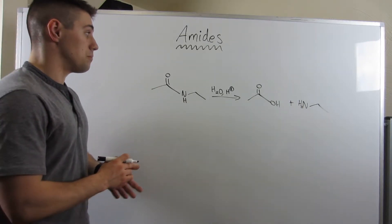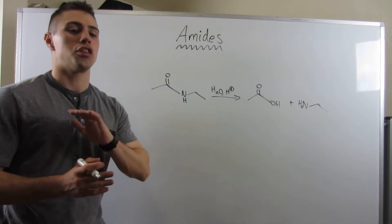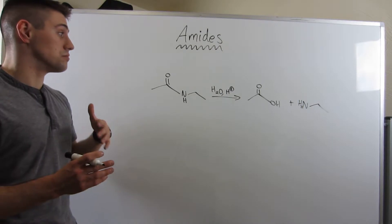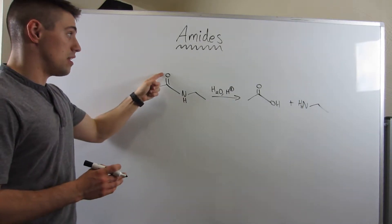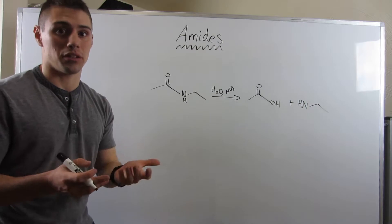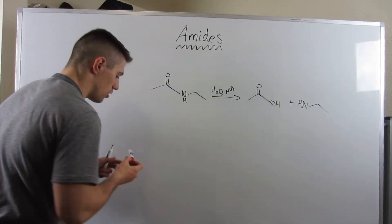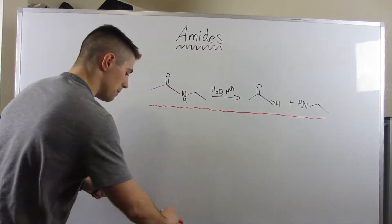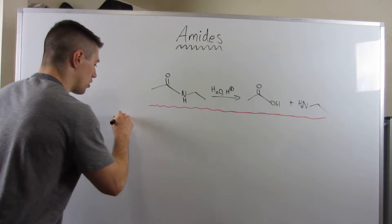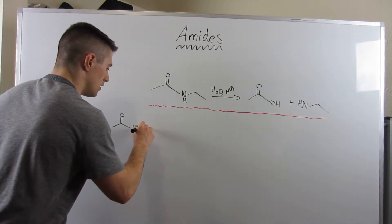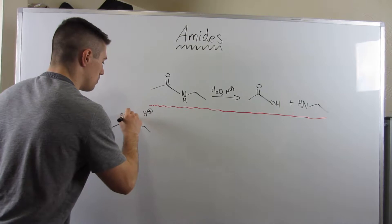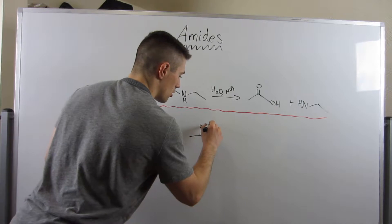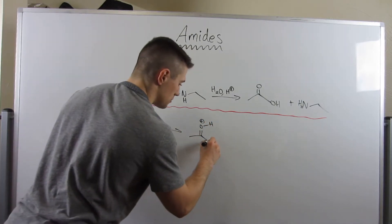Amides, like we said in the first video in the series, are the least reactive carbonyl there is. So we definitely need to protonate this oxygen to activate this carbonyl to get the ball rolling, right? Let me draw a line in red and we'll get going. So let me protonate the carbonyl real quick — H+, protonate the carbonyl oxygen. We'll get the carbonyl carbon as activated as we possibly can.